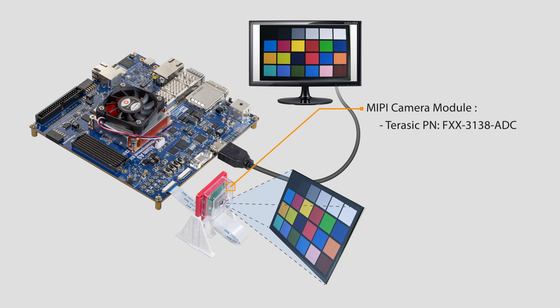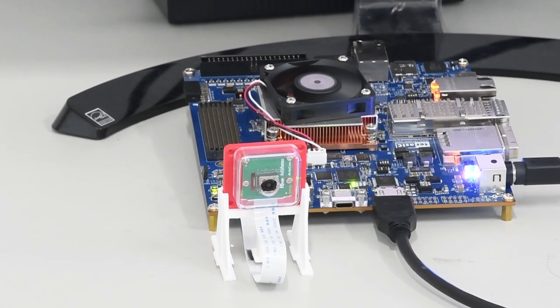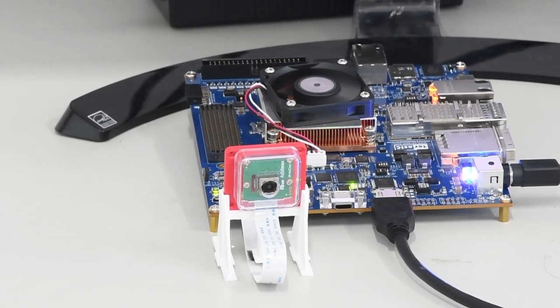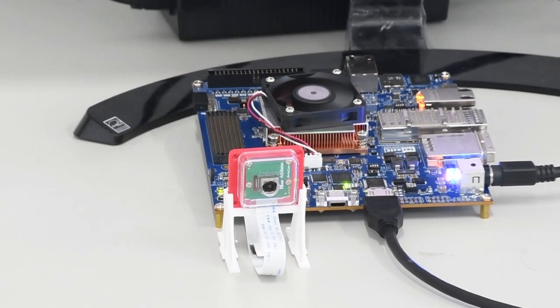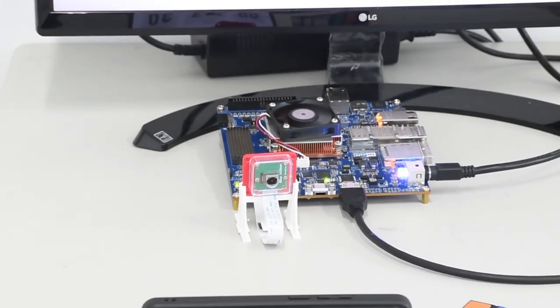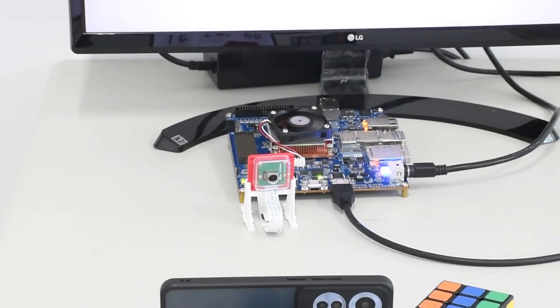This module utilizes the Sony IMX 519 16-megapixel image sensor for capturing images and incorporates a voice coil motor VCM AK7375 for precise lens focus control. The camera module is connected to the MIPI connector via a flexible flat cable, transmitting the image signal to the FPGA.